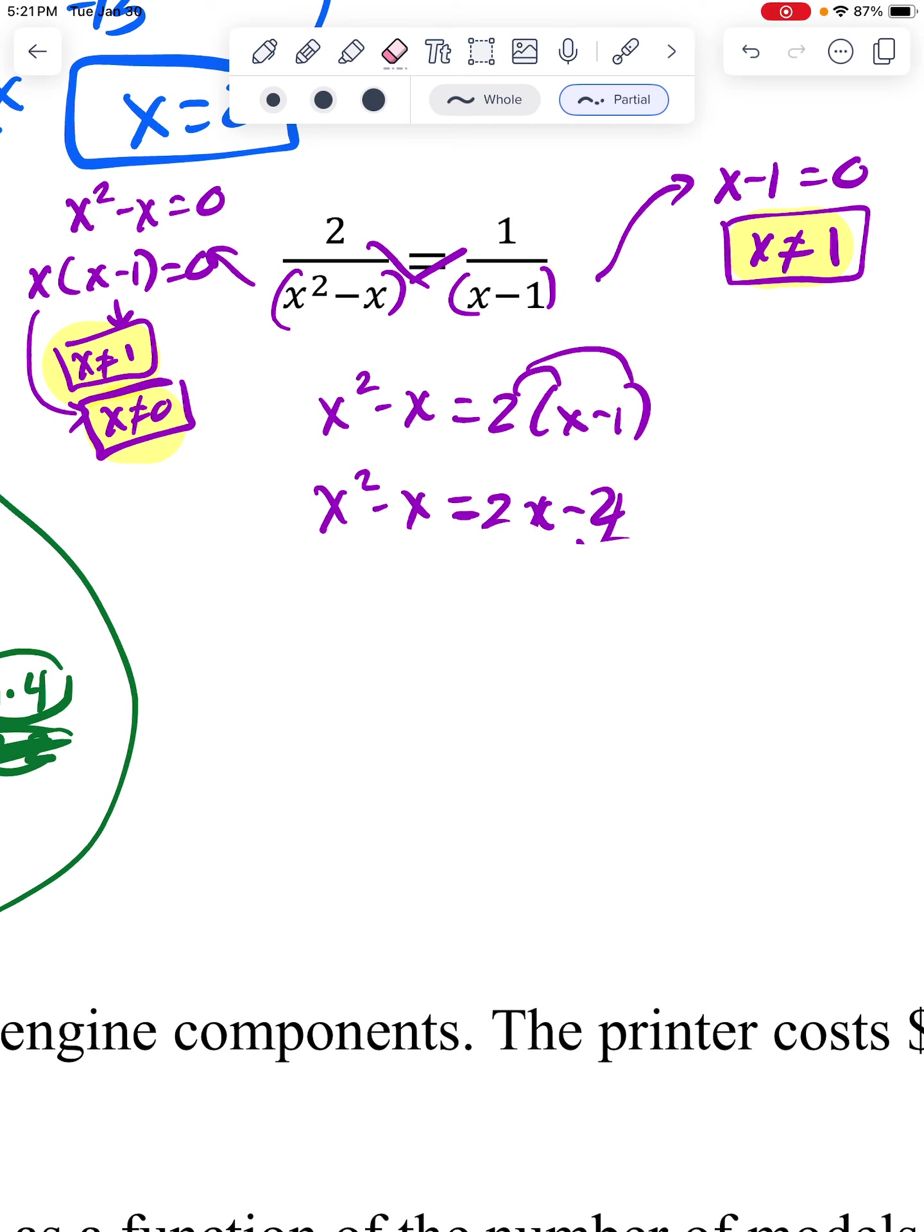So if I move over the 2x by subtraction, I'll have x squared minus 3x, but on this side, I'll still have a minus 2. So now I have x squared minus 3x plus 2 equals 0.